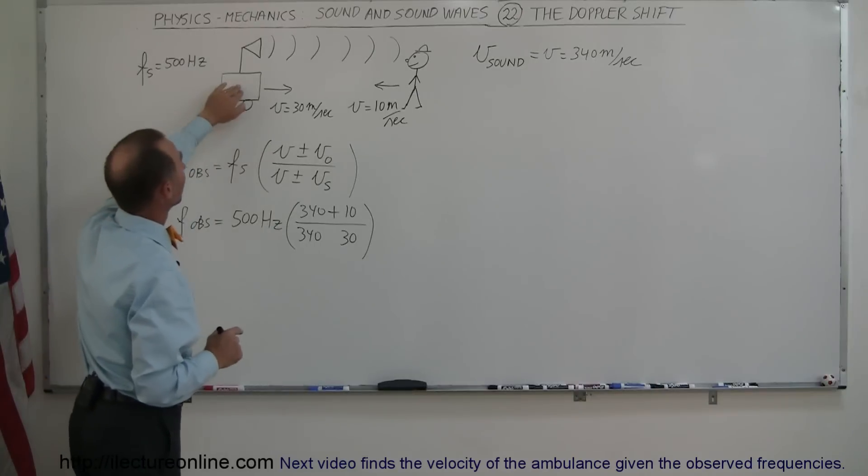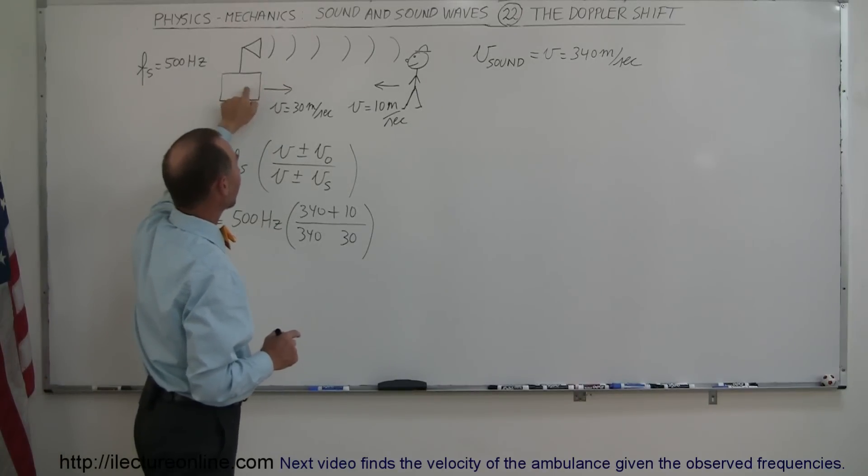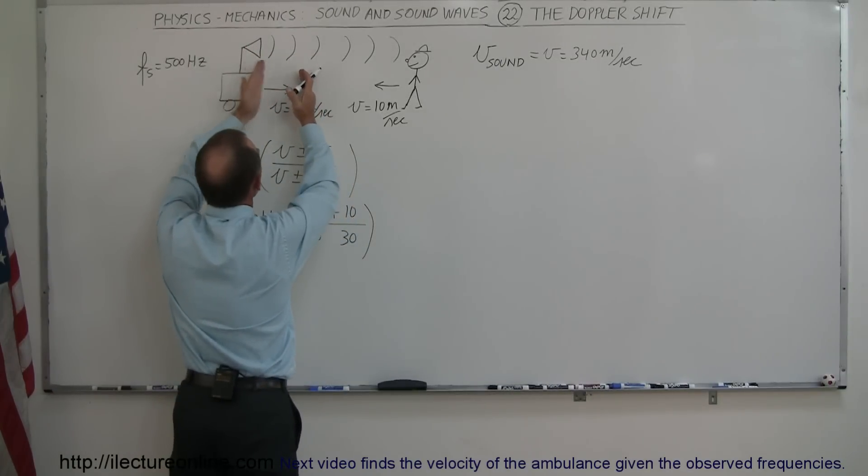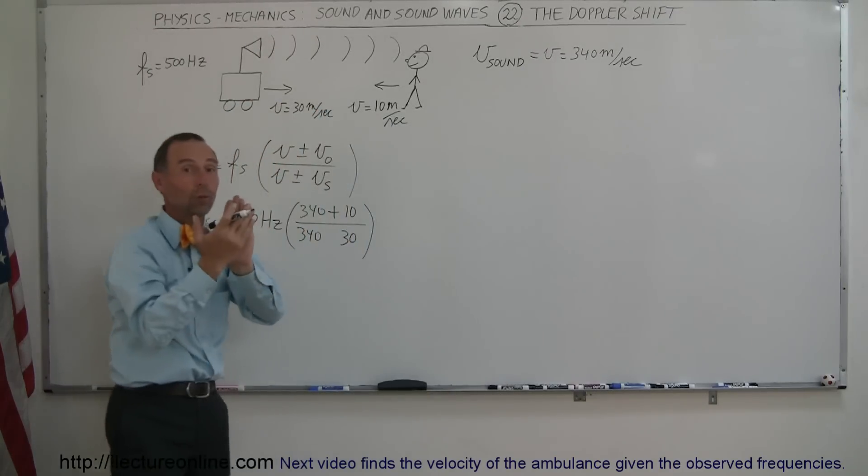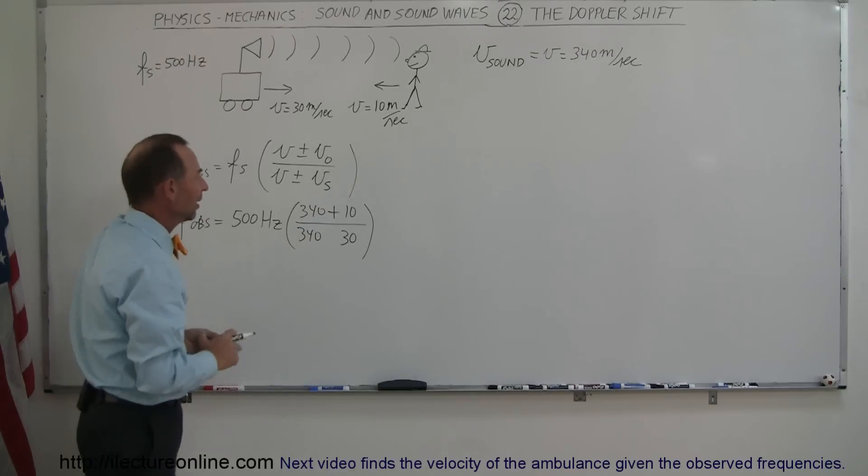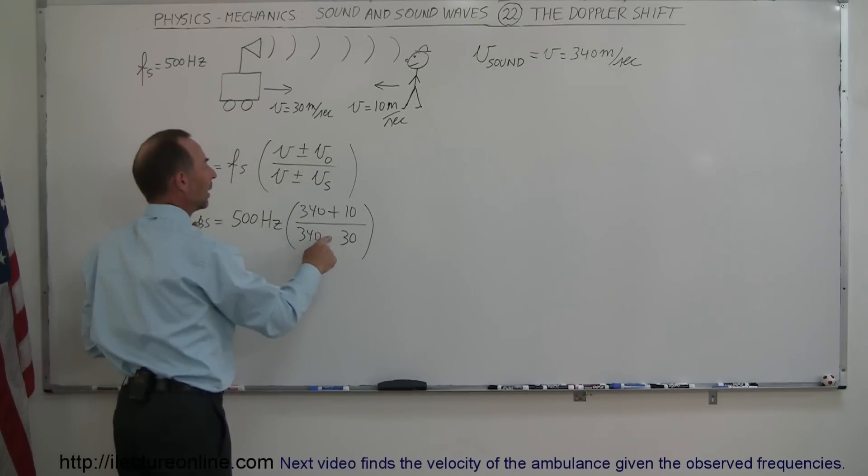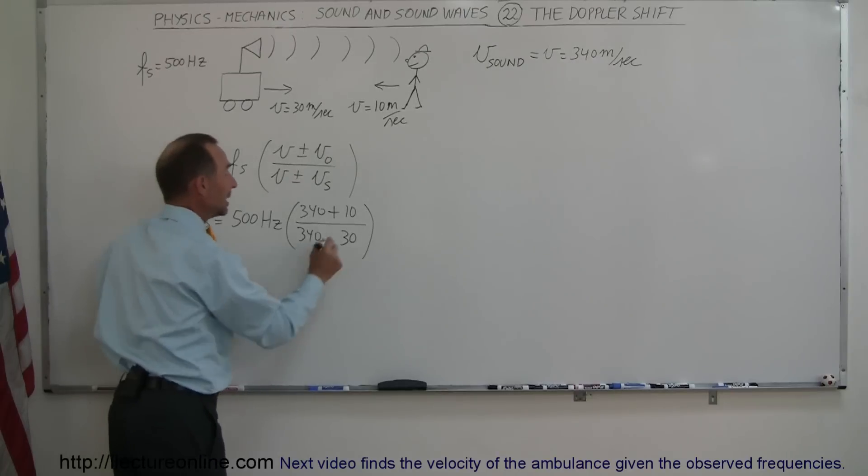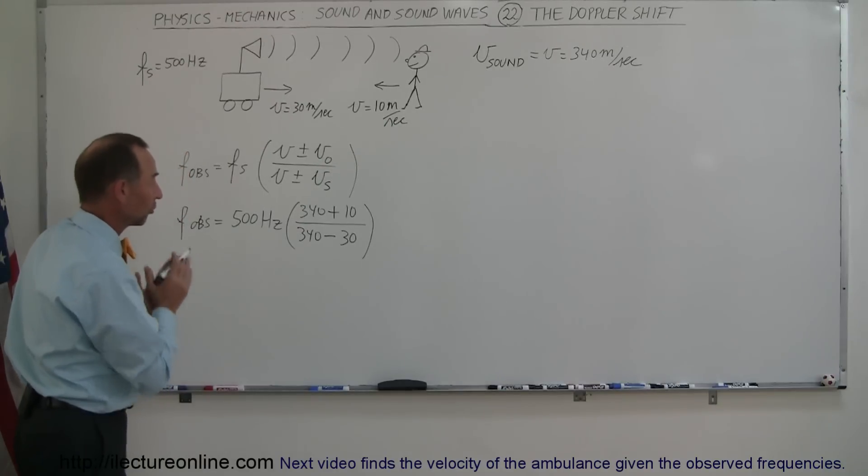Okay, what about the source? The source is moving to the right, which means that again as the waves are being put out, the waves will appear to be closer together because when the next wave is produced, it'll be catching up to the one that was just sent out. It appears that the wavelengths are shorter. Shorter wavelengths means higher frequency. So what sign do we need here to make this a bigger number? Well, a smaller denominator causes a bigger frequency observed. That means we need a minus there. So we subtract, making the denominator smaller. So those are the correct signs.